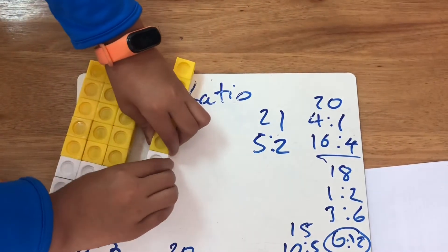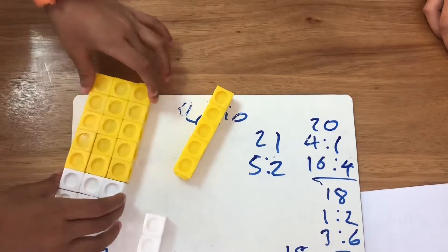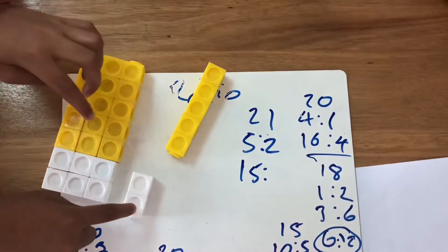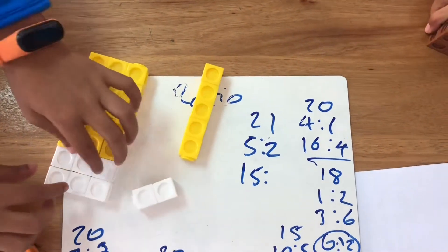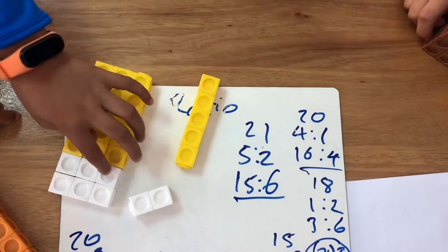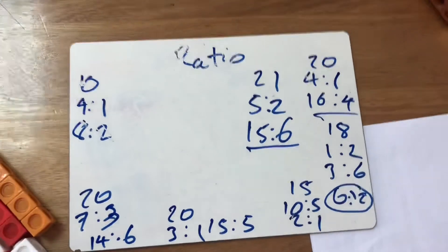So you do 5 yellow blocks times 3 which equals 15 as you can see the yellow blocks. So that becomes 15. And you do the 2 white times 3 which you can see 6 white blocks. So every 5 yellows you get 2 whites. Perfect. I can see that and I can see the math as well. Brilliant. We've got a couple more.